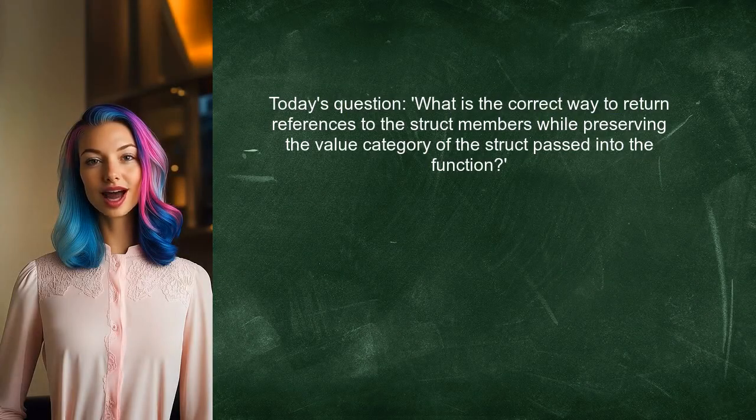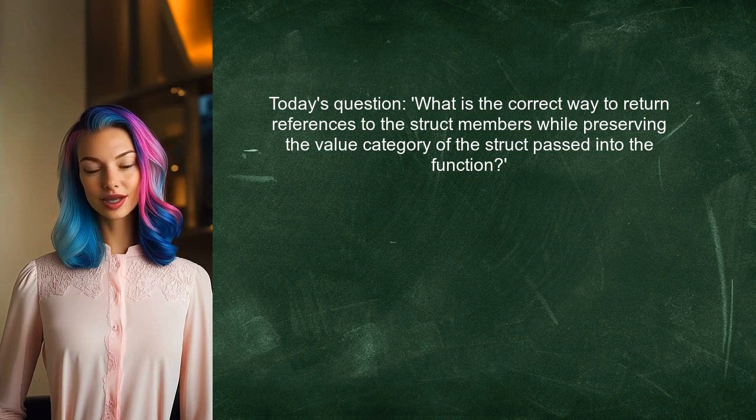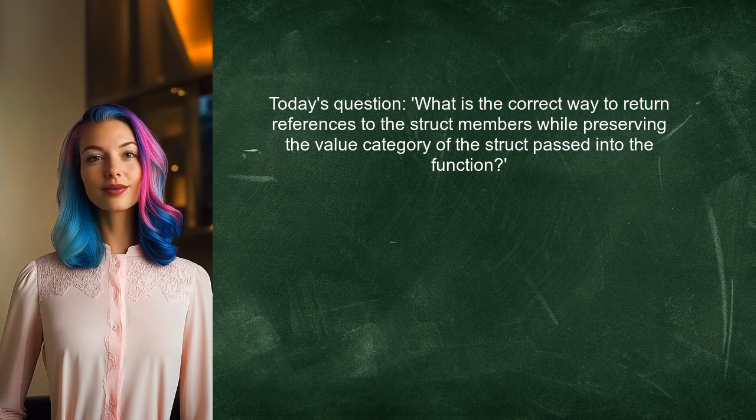Here's the specific question we're addressing today. One user asked, what is the correct way to return references to the struct members while preserving the value category of the struct passed into the function? This is a common challenge when working with templates and structured bindings.